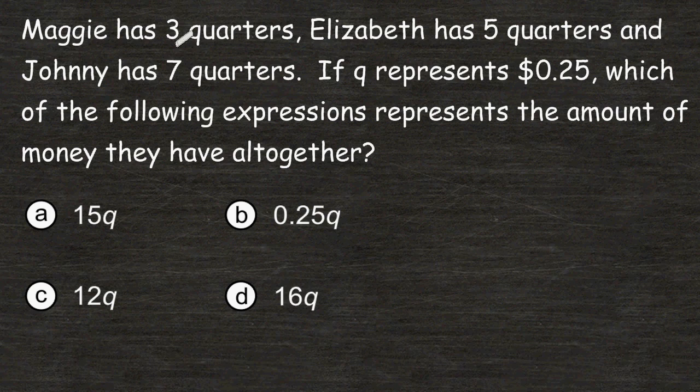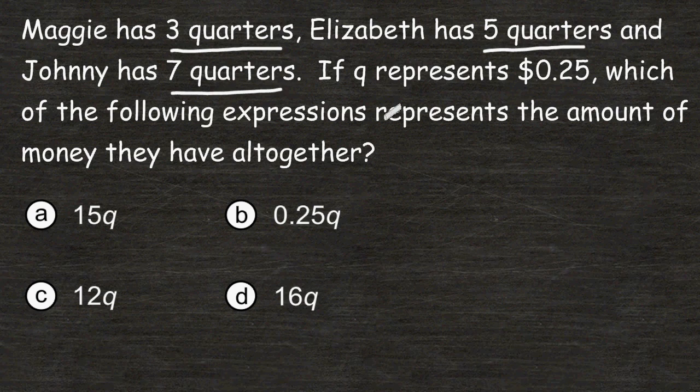In this word problem it says that Maggie has 3 quarters, Elizabeth has 5 quarters, and Johnny has 7 quarters. If Q represents 25 cents, which of the following expressions represents the amount of money they have all together?